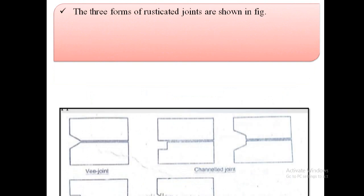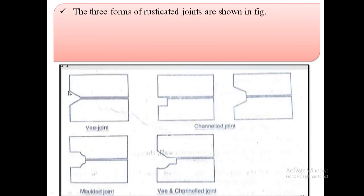The three forms of rusticated joints are shown in figure. First one is V joint, second one is channel joint, and third one is V and channel joint. The channel joint is more common.